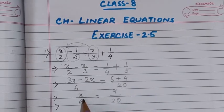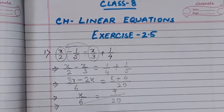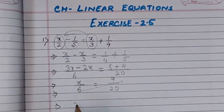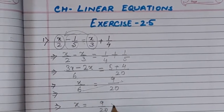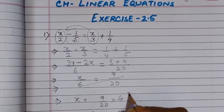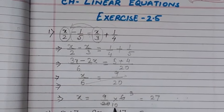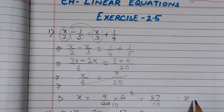We have x by 6 equal to — on the RHS we take the LCM of 4 and 5, which is 20. So it will be 5 plus 4, giving us 9 by 20. So x by 6 equals 9 by 20. The 6 in the denominator on LHS moves to the numerator on RHS. We get x equal to 9 by 20 into 6. Reducing: 2 threes are 6 and 2 tens are 20, so numerator is 9 into 3 which is 27, and denominator is 10. Therefore, the value of x is equal to 27 by 10. This is the answer.